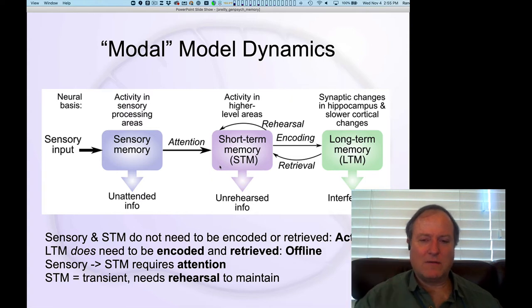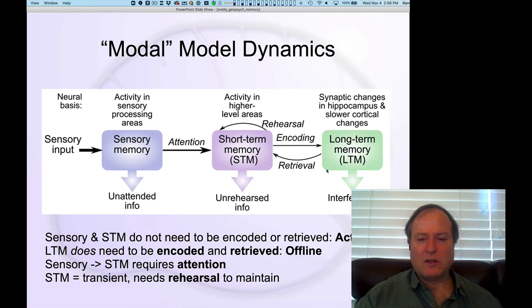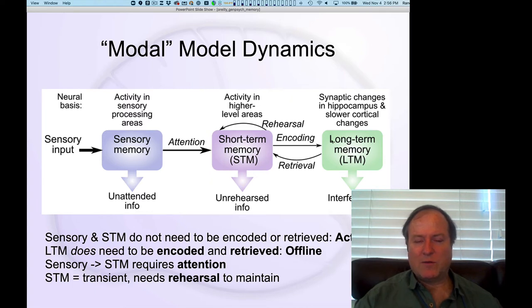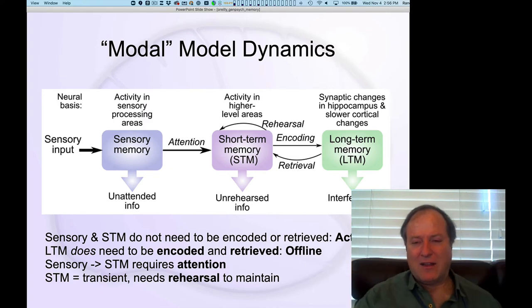We'll see how that plays out. There's the process of rehearsal — this explicit attempt to drive recurrent activity among neurons to keep those neurons firing. That's a critical dynamic in short-term memory. Then there's the process of encoding and retrieval: these more deliberate, explicit, conscious attempts to take information in short-term memory and really try to remember it. Whatever you do when you try to remember someone's name — that process is encoding.